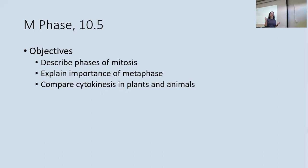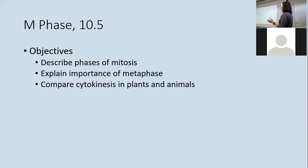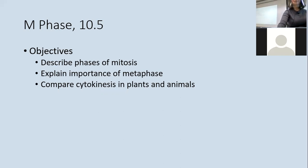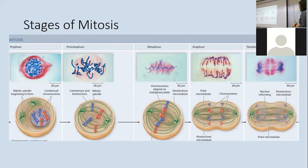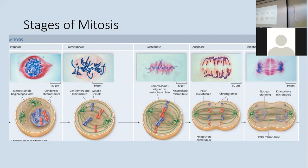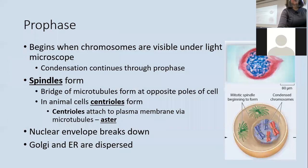M phase is mitosis. We'll talk about each phase of mitosis in detail, with particular focus on metaphase since if metaphase goes wrong everything goes wrong. We'll also cover how cytokinesis differs between plants and animals. Mitosis has five stages: prophase, prometaphase, metaphase, anaphase, and telophase.